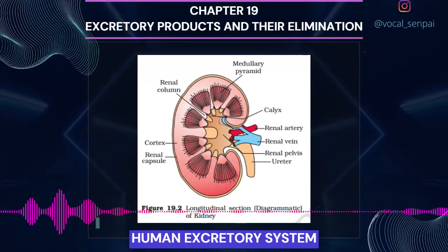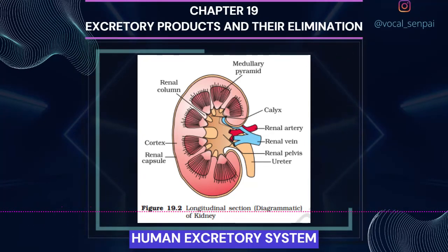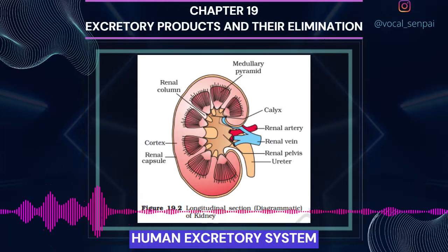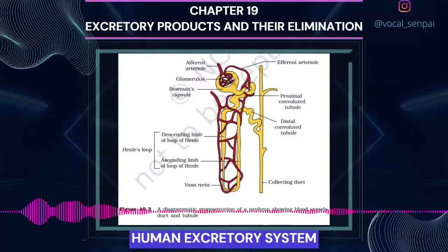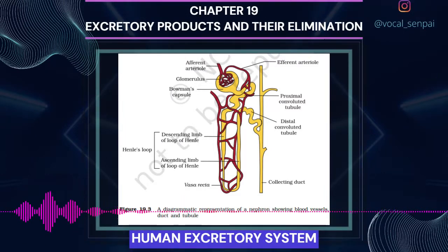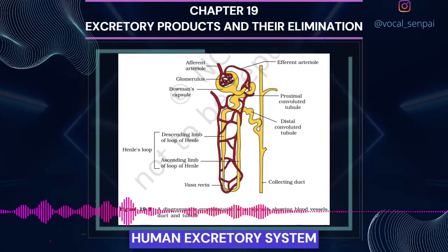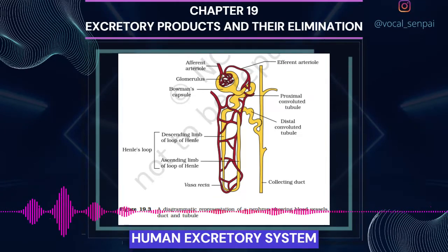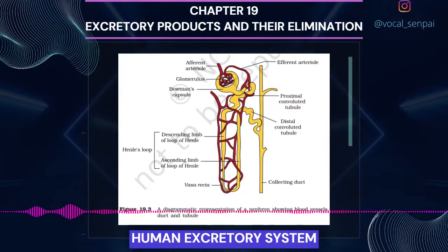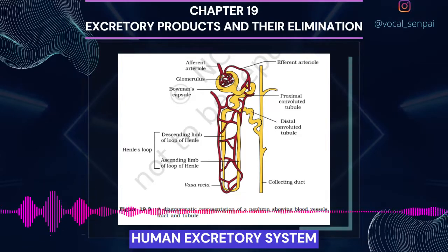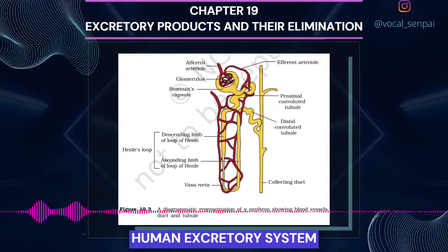Each kidney has nearly 1 million complex tubular structures called nephrons (figure 19.3), which are the functional units. Each nephron has two parts: the glomerulus and the renal tubule. Glomerulus is a tuft of capillaries formed by the afferent arteriole, a fine branch of renal artery. Blood from the glomerulus is carried away by an efferent arteriole. The renal tubule begins with a double-walled cup-like structure called Bowman's capsule which encloses the glomerulus. Glomerulus along with Bowman's capsule is called the Malpighian body or renal corpuscle (figure 19.4). The tubule continues further to form a highly-coiled network called proximal convoluted tubule, PCT. A hairpin-shaped Henle's loop is the next part of the tubule which has a descending and an ascending limb.